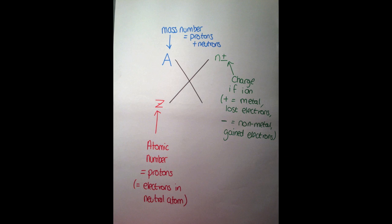Z represents the atomic number which is always the number of protons, and for an atom this will also be the number of electrons. A represents the mass number which is the protons plus the neutrons, and N which can be positive or negative is the charge if you are dealing with an ion.